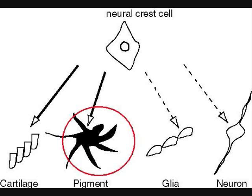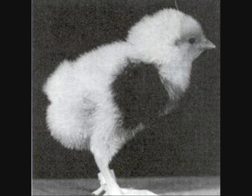So then, what happened to the chicks? When they hatched, they had patches that were a different color, the same color as the quails the cells were taken from.